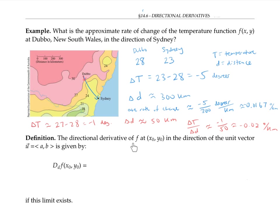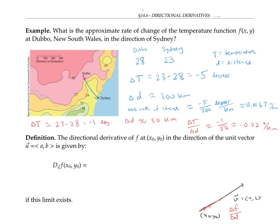The directional derivative of a function at a point (x₀, y₀) in the direction of a unit vector u with components a and b can be found by starting at the point (x₀, y₀) and heading in the direction of the unit vector u, but traveling shorter and shorter distances along that unit vector, and calculating ΔF over ΔD — that's the change in the function over the distance — for all those shorter and shorter vectors. We write that as the limit as the distance goes to zero of ΔF over ΔD.